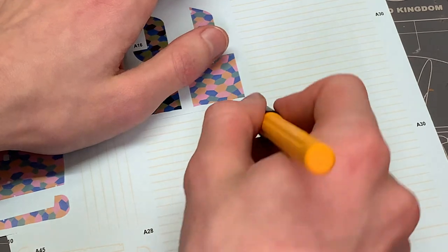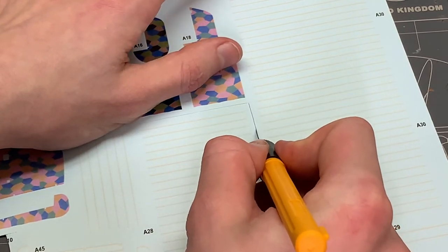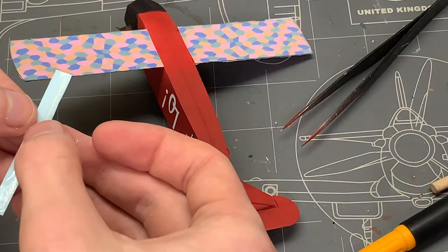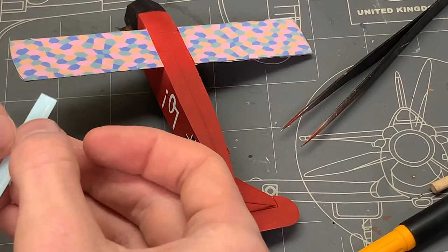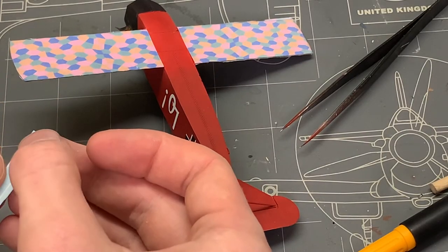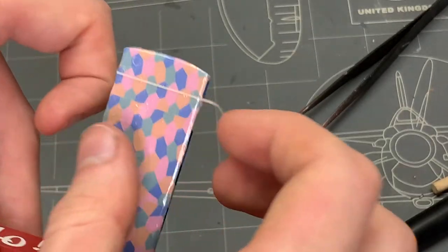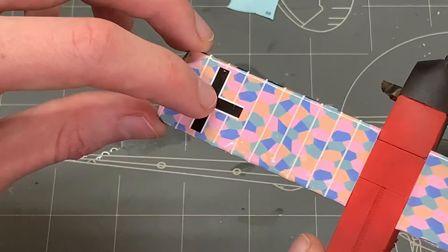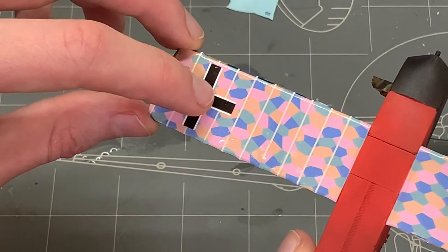Then I had to apply the rib stripe decals on top of the lozenge ones. This was probably the most tedious part of the decaling process because there's like 30 of them and you're just putting stripes onto the already applied decals. The last parts were the German crosses we had to put on top of the other decals.